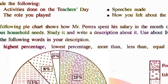Highest percentage is used for the highest value. Lowest percentage is used for the lowest value. More than is used for comparison. Equal is used when two values are the same. Now we can use these terms in our sentences.